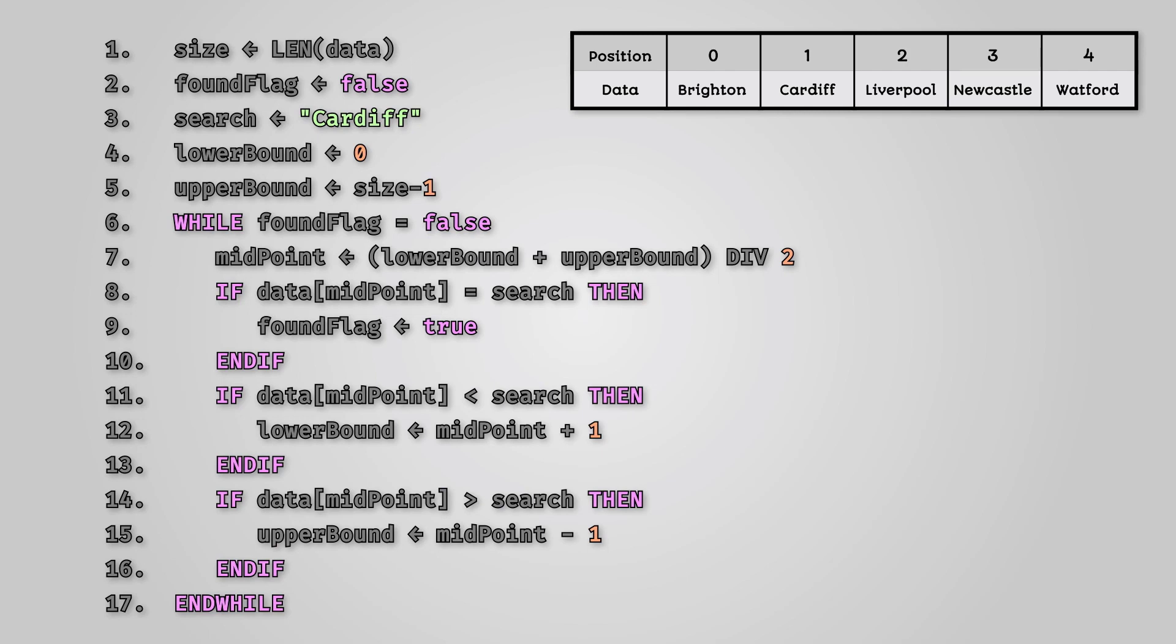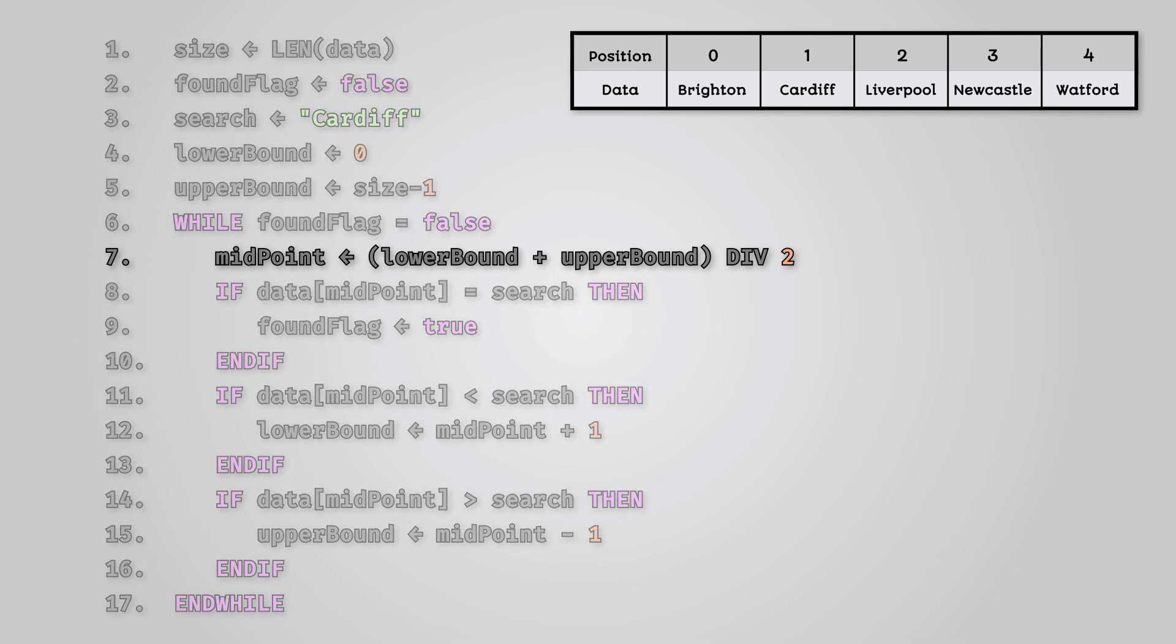Let's look at some of the more important sections of this code in detail. The following line of code identifies the midpoint. This div command will get the whole number from a division discarding the remainder. After this we will check to see if the text at the midpoint is actually what we're looking for. If it is we set the found flag to true so we know that it has been located.